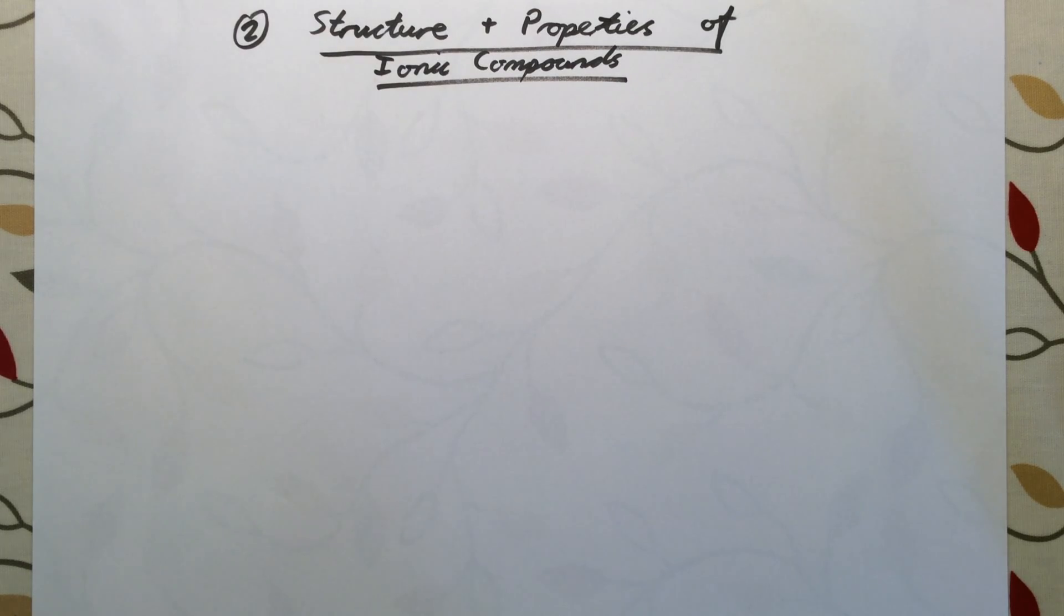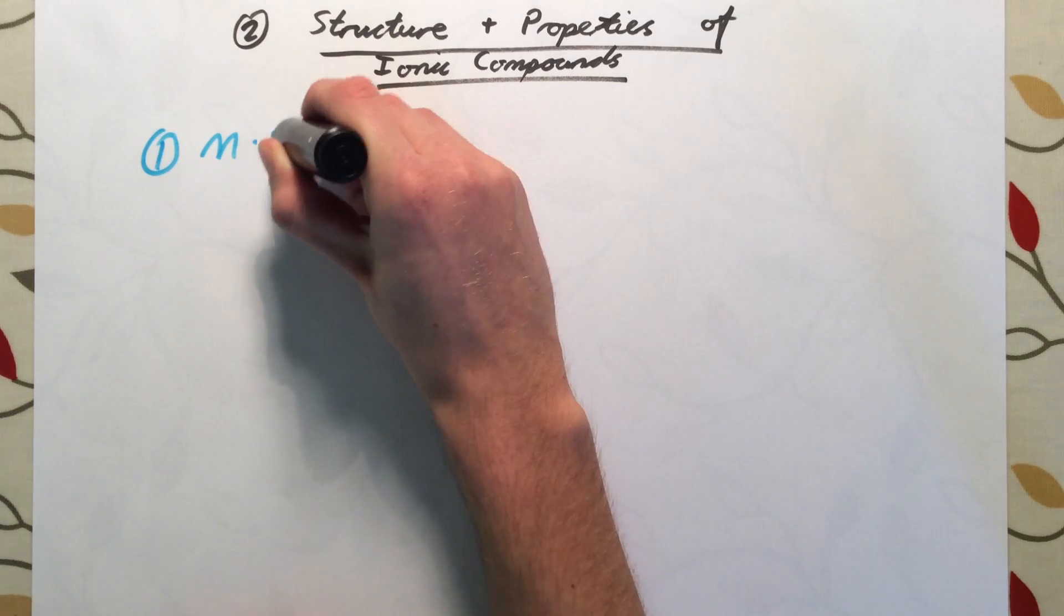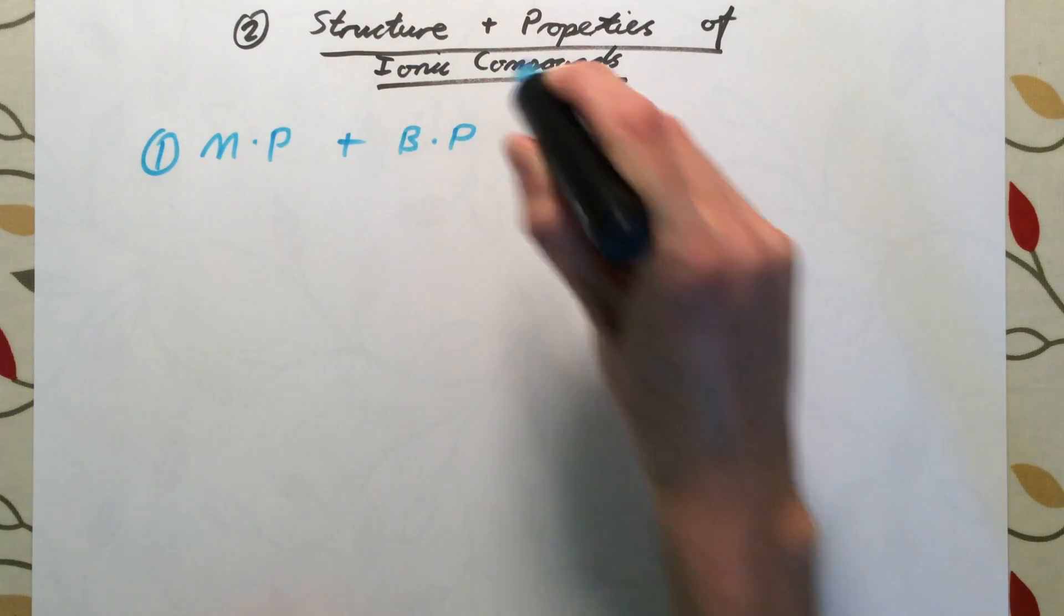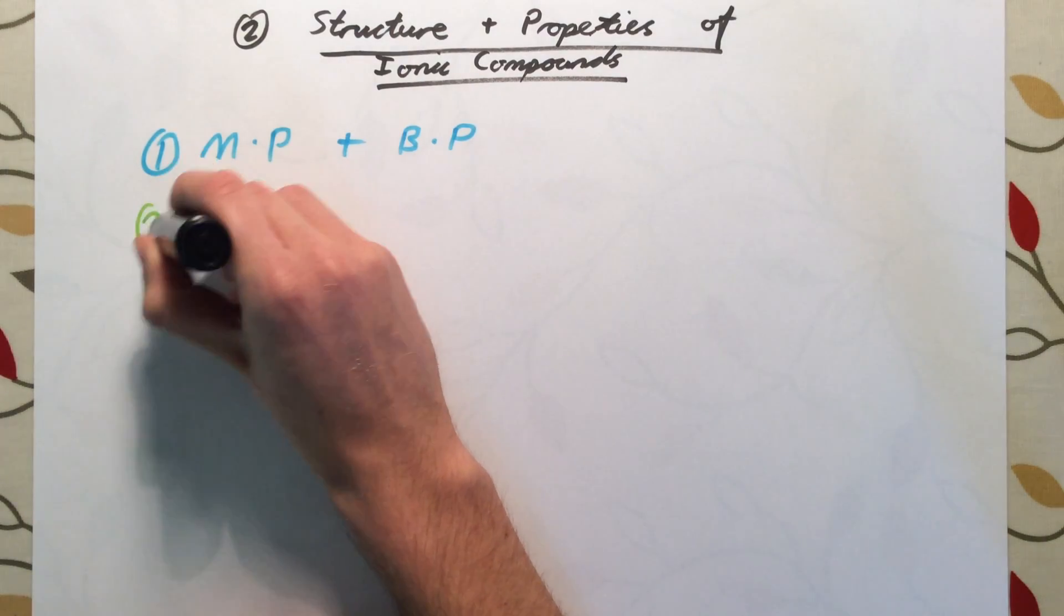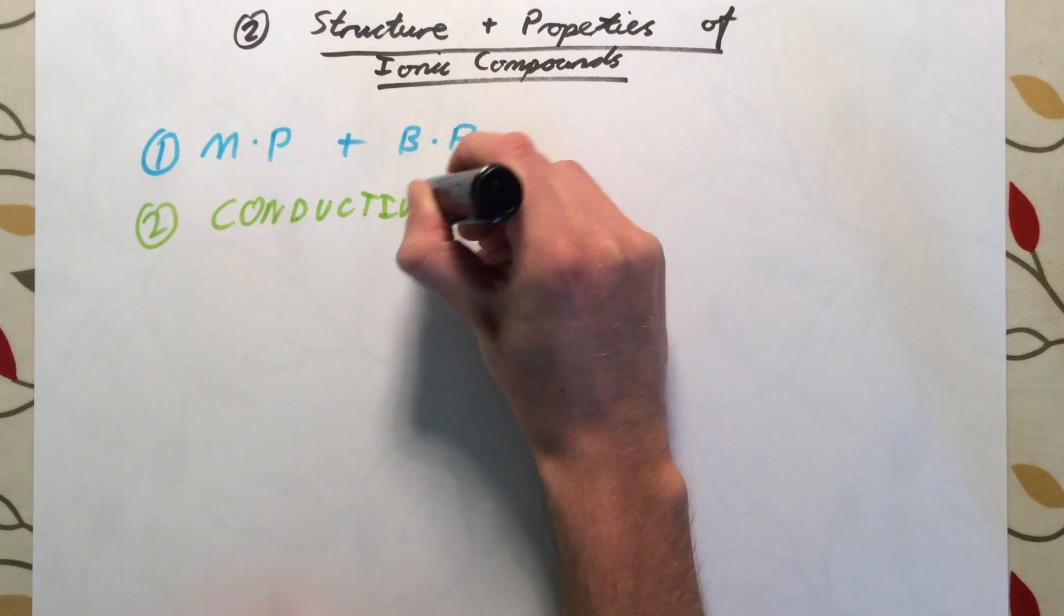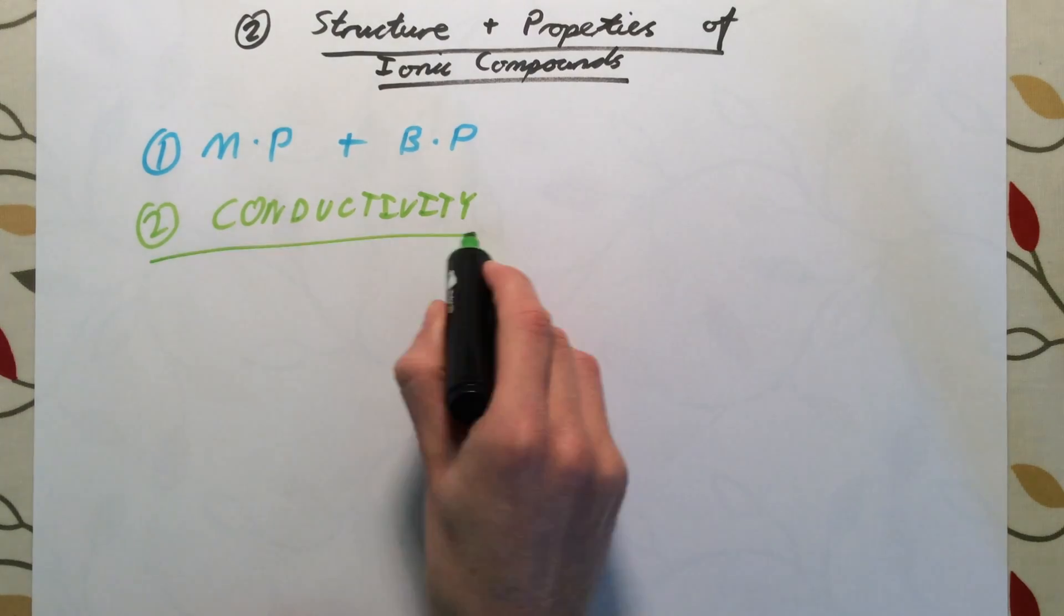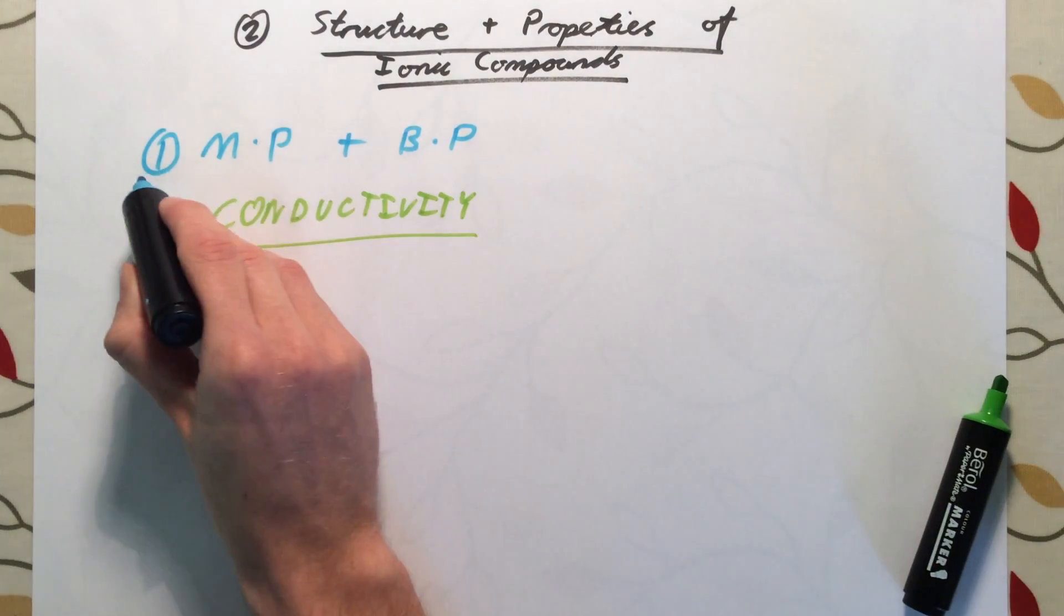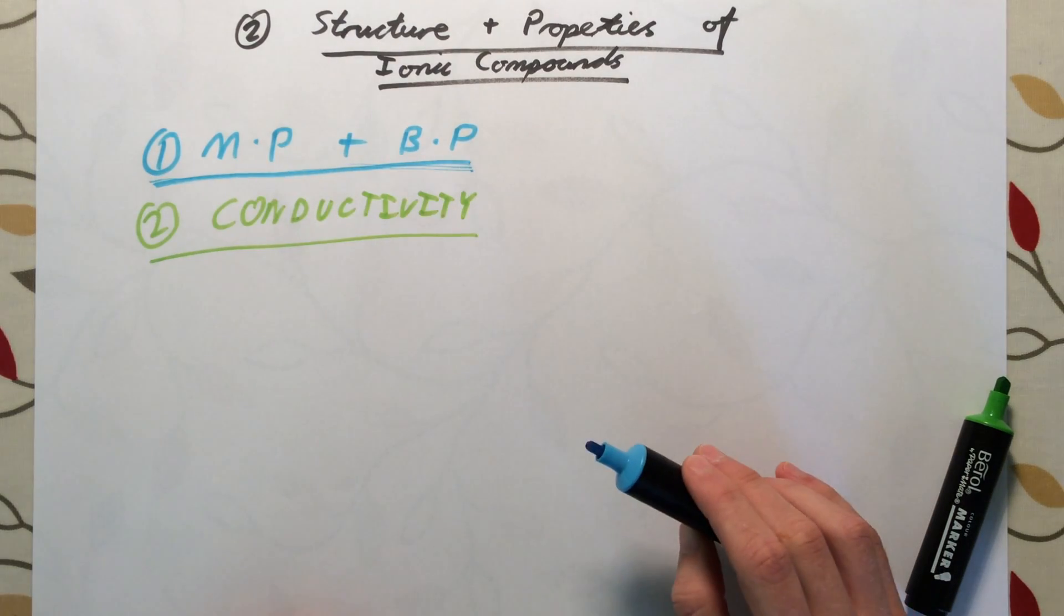For foundation tier, we need to be able to describe the properties of these compounds. We need to talk about their melting points and boiling points, and also their conductivity - do they conduct electricity and if so, when. For higher tier, we also need to be able to explain why ionic compounds have the properties they do.